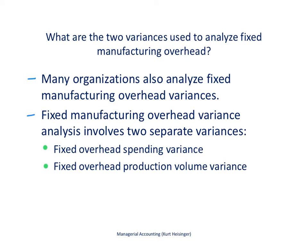Many organizations analyze fixed manufacturing overhead, and they will look at a couple of variances to try to figure out why cost differed from what was expected in the budget. There are two separate variances associated with fixed manufacturing overhead. The first is the spending variance, which really analyzes whether we spent more or less than we expected to spend on our fixed overhead.